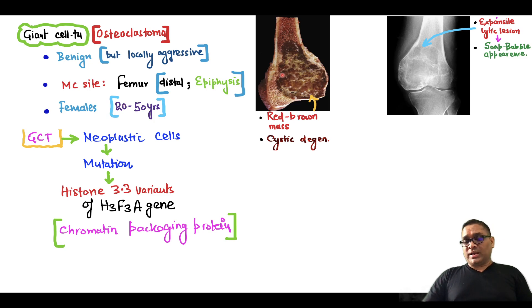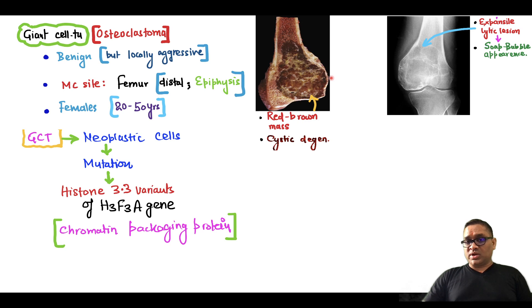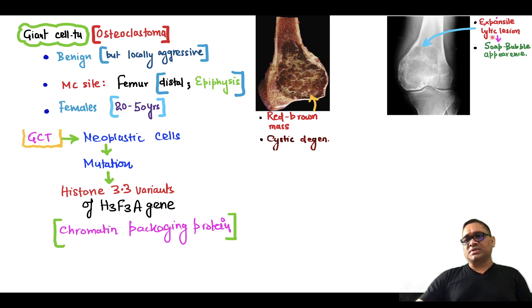On examination of the gross specimen, you will find a red-brown mass. You can notice this red-brown mass is having cystic degeneration. You can see tiny cysts are also visible, with yellow borders present.